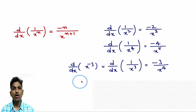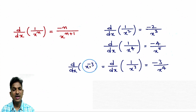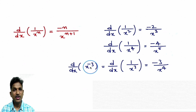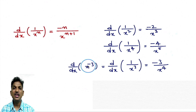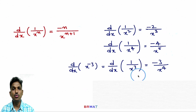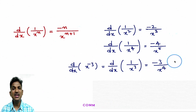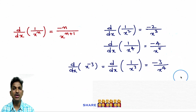Derivative of x power minus 3 — you can apply the derivative of x power n formula, or you can apply the 1/x power n formula, because x power minus 3 is nothing but 1/x cube. Applying the formula: derivative of 1/x cube gives minus 3 divided by x power 4.